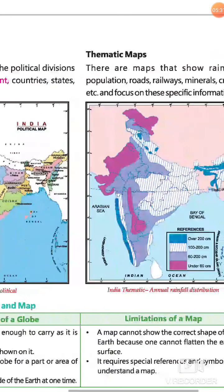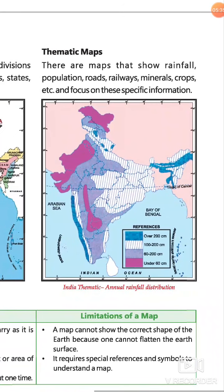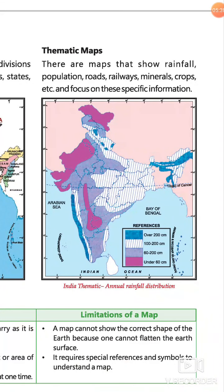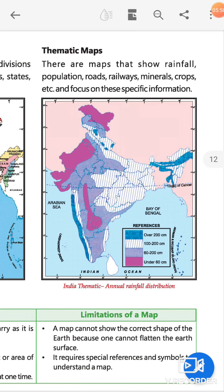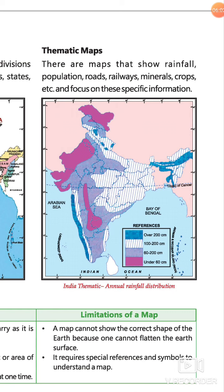दूसरा है thematic map। Thematic map उस map को कहते हैं जिसमें rainfall, population, roads, railways, minerals, crops आदि show की जाती हैं और उस पर focus किया जाता है। इस map से एक specific information collect की जा सकती है।